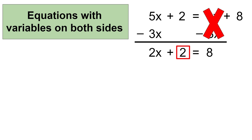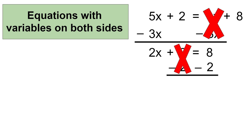The constant 2 is being added in this equation. So to remove it, we have to use the opposite operation, which is subtraction. And remember, whatever you do on one side of the equal sign, you need to do the same on the other side to keep it equal. So to remove 2 from the left side, I'm going to subtract 2 from the left side. And 2 minus 2 equals 0, which completely removes 2 from the left side. Since I've subtracted 2 on the left, I'll also need to subtract 2 from the right side. And 8 minus 2 equals 6.